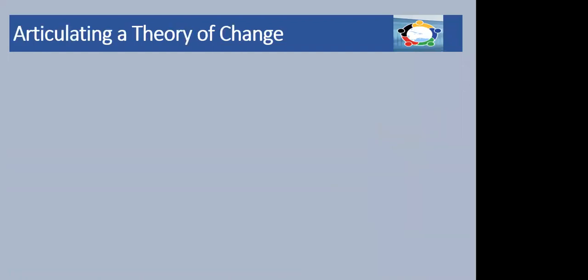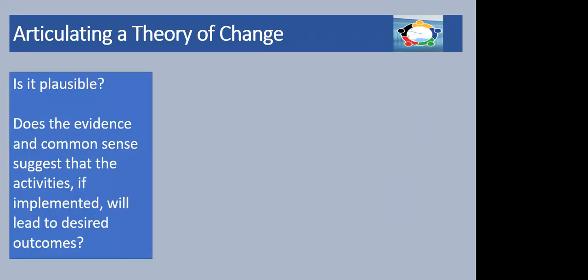So how do we articulate a theory of change? I've often used Connell and Kaboosh's three questions for determining a strong theory of change. The first question is: is it plausible? Before beginning to think about your logic model, think about whether the evidence and common sense suggest that if we do set up a youth club in this neighbourhood — delivering group activities, mentoring, and counselling — we will see a decrease in antisocial behaviour and an increase in community safety. Common sense suggests that's a very plausible approach, and I'm sure there's evidence to support it.